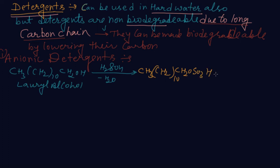Now they react with sodium hydroxide. Again removal of water and we will get the anionic detergent. And that is CH3(CH2)10CH2OSO3Na.